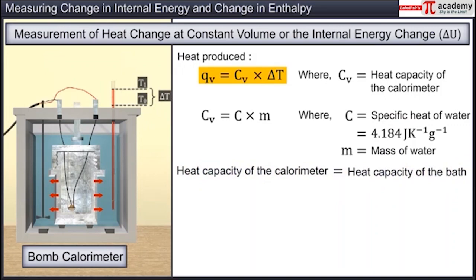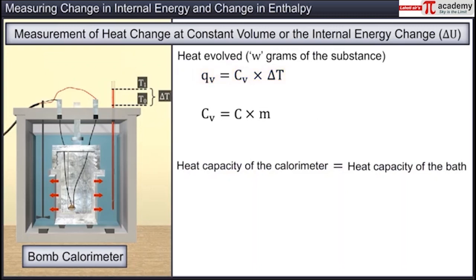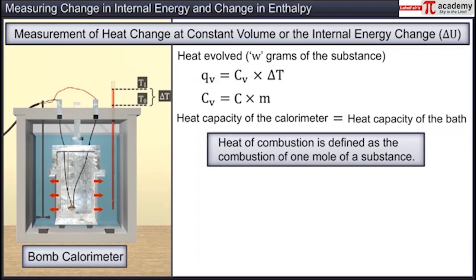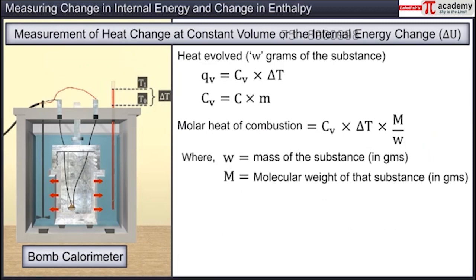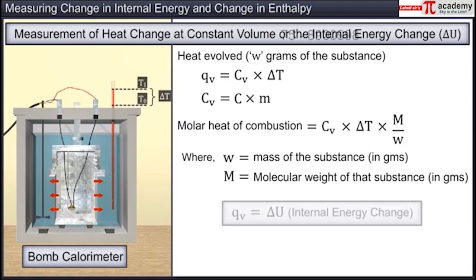QV expressed above is the heat evolved when combustion of W grams of the substance takes place. Since heat of combustion is defined as the combustion of one mole of a substance, the molar heat of combustion = CV × delta T × M / W, where W is the mass of the substance taken and M is the molecular weight of that substance. As the reaction is carried out in a closed vessel, the heat evolved is the heat of combustion at constant volume and is a measure of internal energy change, delta U.